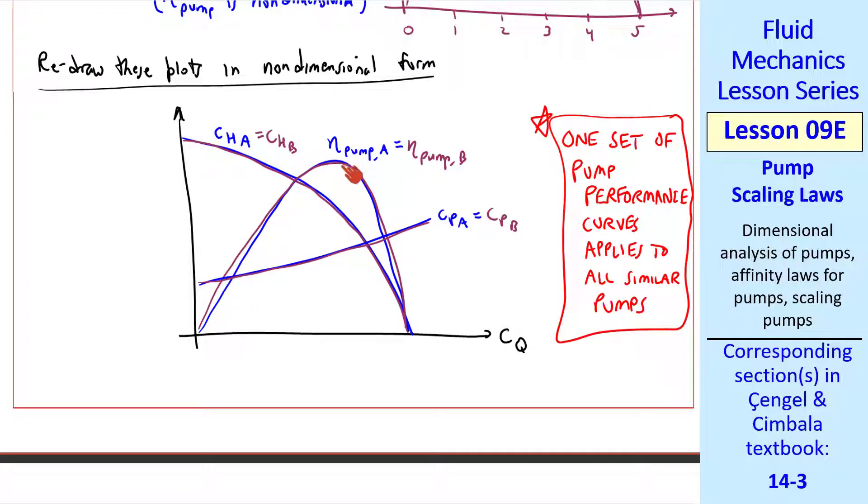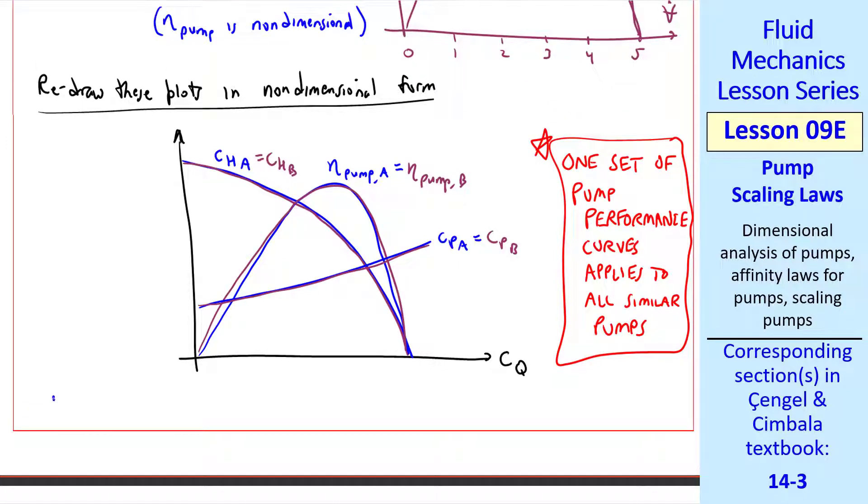So we can use this set of pump performance curves to scale our pump up or down. The caveats being that they must be geometrically similar and dynamically similar. For most problems, all this means is that the CQs match. And as mentioned before, we also have Reynolds number and roughness parameter which also need to be included at small Reynolds number, but we won't look at cases like that.